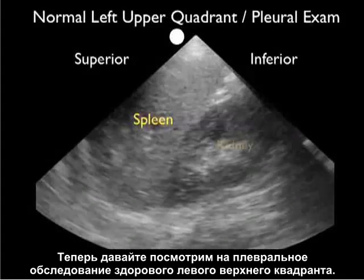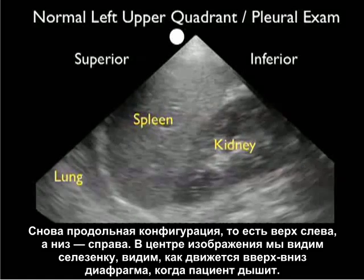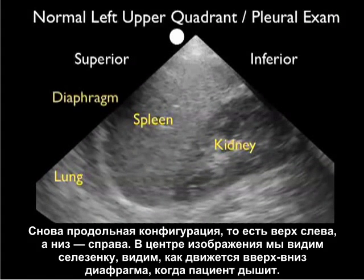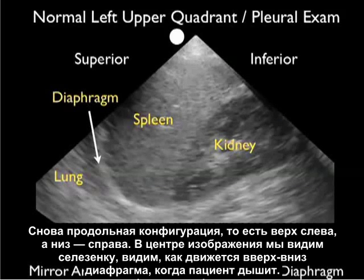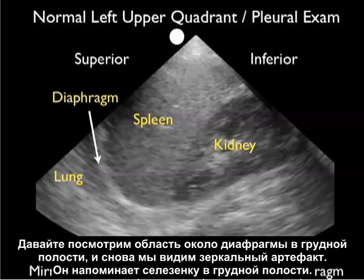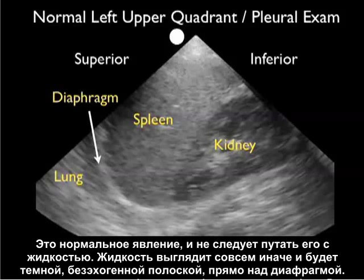Now let's take a look at a normal left upper quadrant pleural exam. Again we're in a long axis configuration, so superior to the left and inferior to the right. We see the spleen in the middle of the image and the diaphragm moving up and down as the patient breathes. Looking above the diaphragm into the thoracic cavity, we again see that mirror artifact — almost like a reproduction of the spleen within the thoracic cavity. This is a normal finding and one not to be confused with fluid. Fluid will appear very differently and will have the appearance of a dark or anechoic stripe right above the diaphragm.